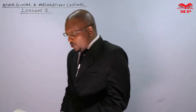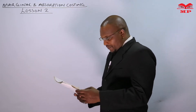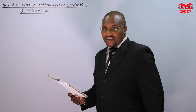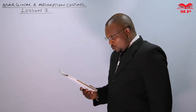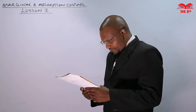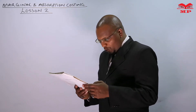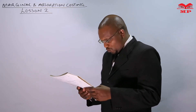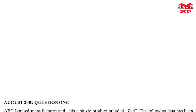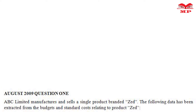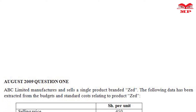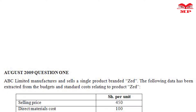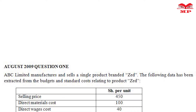The question reads, and it is from August 2009, the pilot paper, question one. WC Limited manufactures and sells a single product branded Z. The following data has been extracted from the budget and standard cost relating to product Z.